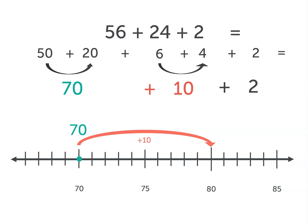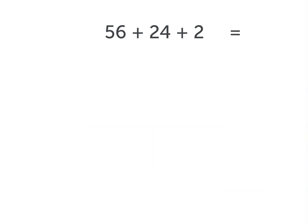adding 10 spaces to that, and then 2 more, landing at the number 82. This tells us that our sum of 56 plus 24 plus 2 is 82.